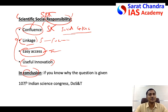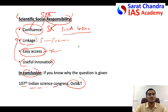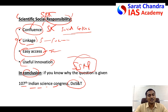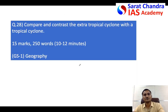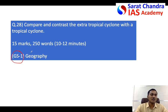In the conclusion, as I mentioned, you can write why this question was asked. You can say that in the recently concluded 107th Indian Science Congress, the Department of Science and Technology mentioned that the Government of India is going to release a Scientific Social Responsibility policy, and that the government has recognized the importance of the ethical and moral obligation of scientists towards society.